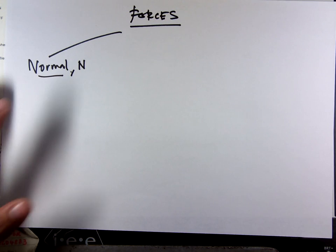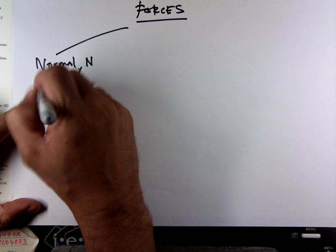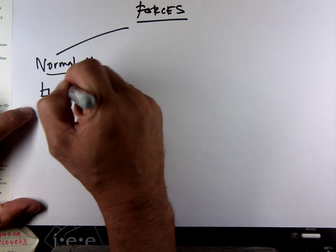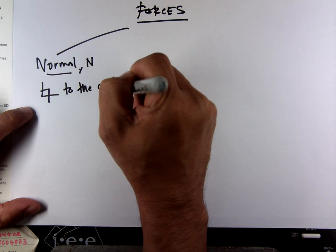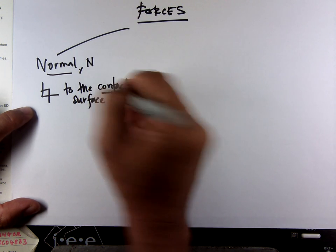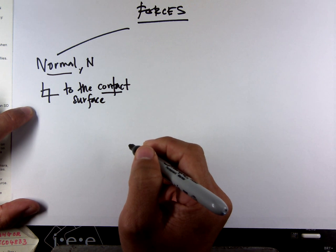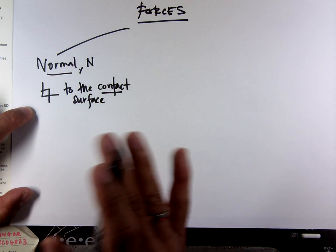What is normal force? Normal force is force that is perpendicular to the contact surface. Again, contact surface means if there is no contact, no normal force.